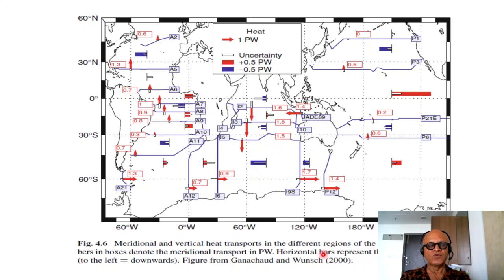Looking at a few more numbers, you can see this is again from Ganachaud and Wunsch, which shows meridional and vertical transports in different regions of the world ocean. The numbers in boxes denote meridional transport in petawatts. Horizontal bars represent vertical transports. To the left is downwards, so if the arrow is pointing from the origin towards the left, it's downward. And if it is going from the line to the right, very few to the right here, that would be upward.